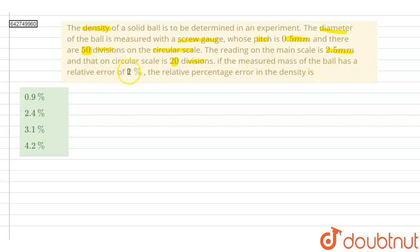If measured mass of the ball has relative error of 2%, the relative percentage error in the density is? So in this question we have to calculate the relative percentage error in the density of the solid ball. We are provided with the screw gauge readings for the measurement of diameter and also the relative error for measured mass of the ball.